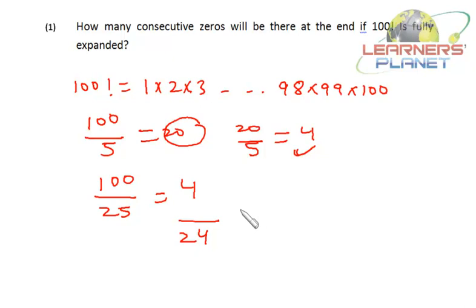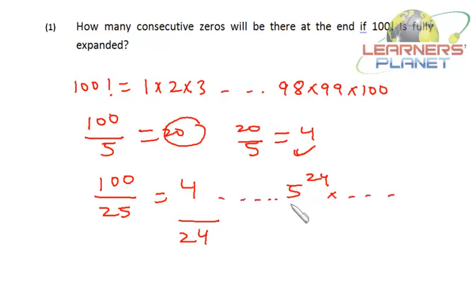That means if we prime factorize 100 factorial, we'll find 5^24 in it. Similarly the number of 2s will be much more than the number of 5s, but we are interested only in combinations. So we'll get 24 combinations of 2 and 5, meaning there will be 24 zeros at the end of 100 factorial.